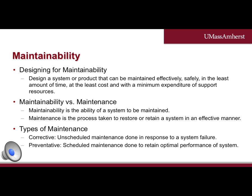Maintainability and maintenance are two different but related concepts. Maintainability is the ability of a system to be maintained. Maintenance is the process taken to restore or retain a system in an effective manner. There are two types of maintenance performed on systems. Corrective maintenance is the unscheduled maintenance accomplished as a result of failure to restore a product to a specified level of performance, including initial detection of failures, localization and diagnostics, disassembly, adjustment, and alignment up to verification of the system. Preventative maintenance is scheduled maintenance accomplished to retain a system at a specified level of performance by providing systematic inspection, detection, servicing, or prevention of impending failures through periodic item replacements.